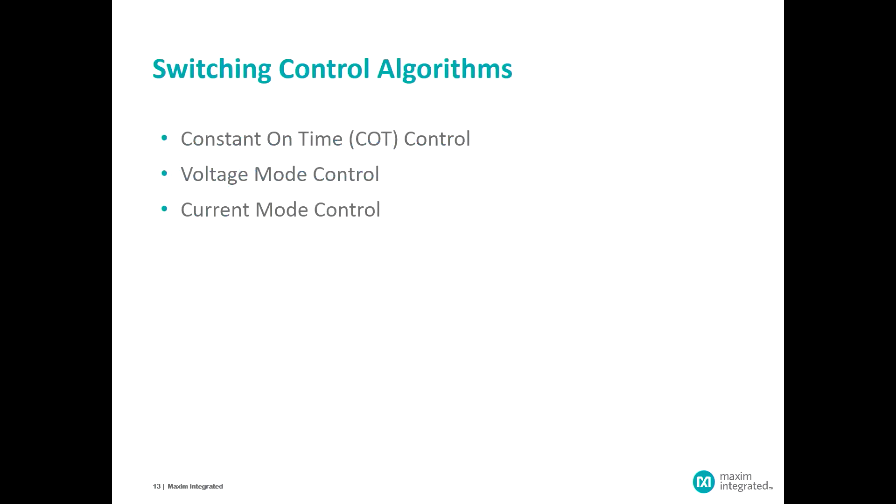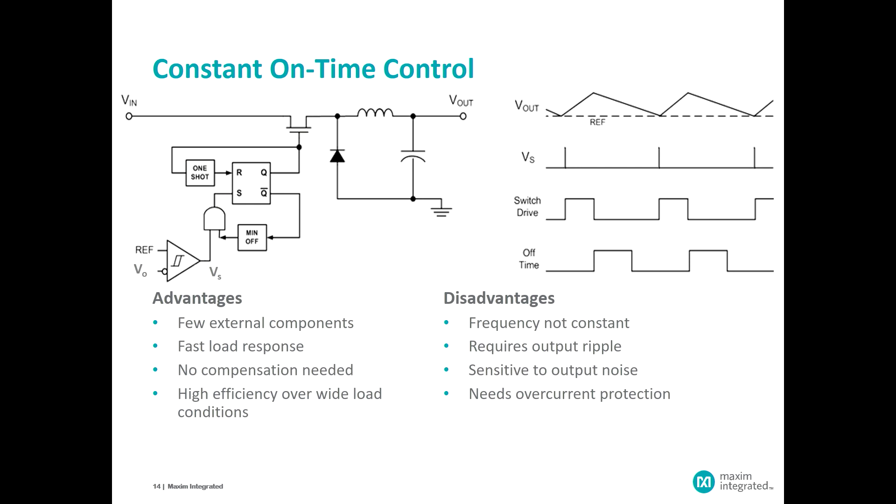The control algorithms that are used to define the operation of the switching action. There are today probably hundreds of different control algorithms that have been designed and defined for various applications and for different product types. We can't begin to cover even a small amount of them, we're only going to talk about three: the constant on time control algorithm, voltage mode, and current mode control. These three are the most popular types, the most widely used at least at this period in our history. So let's start with the constant on time control algorithm.